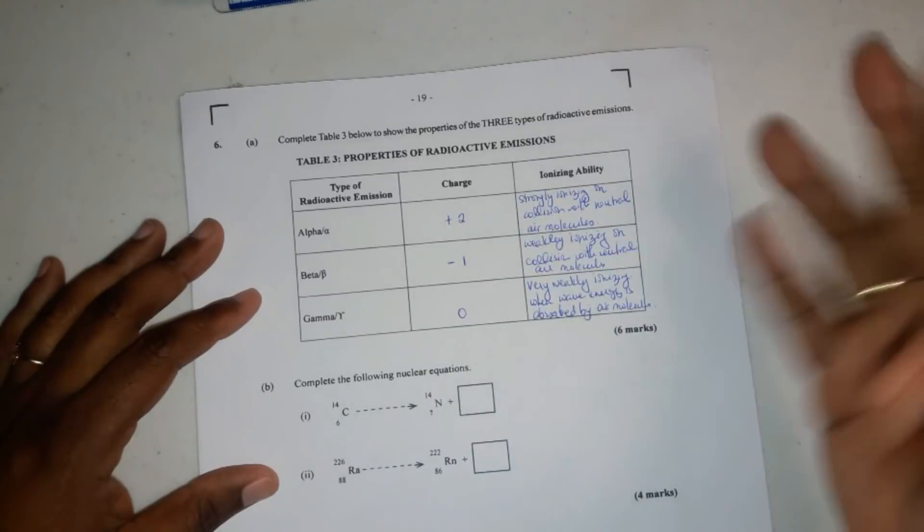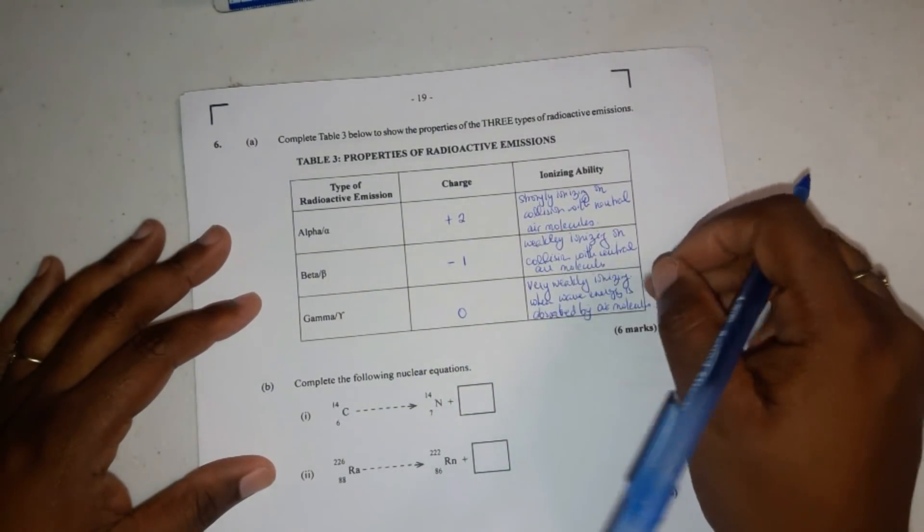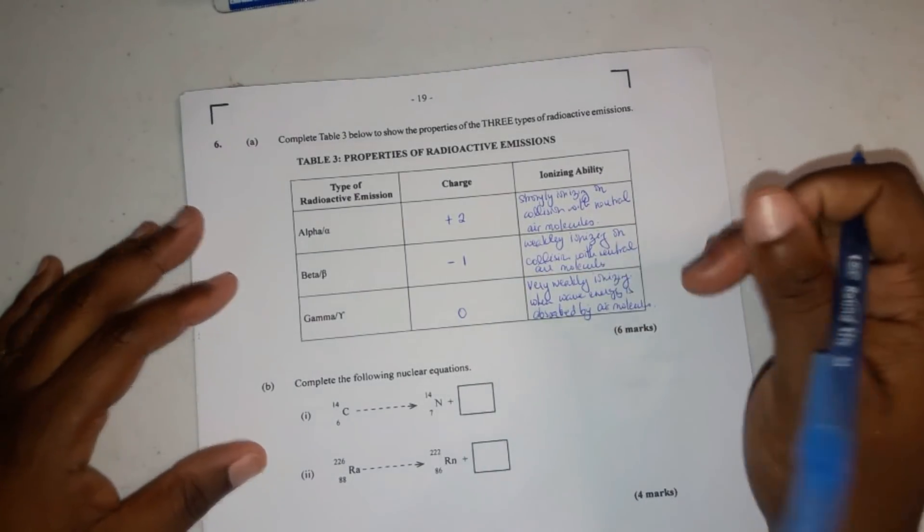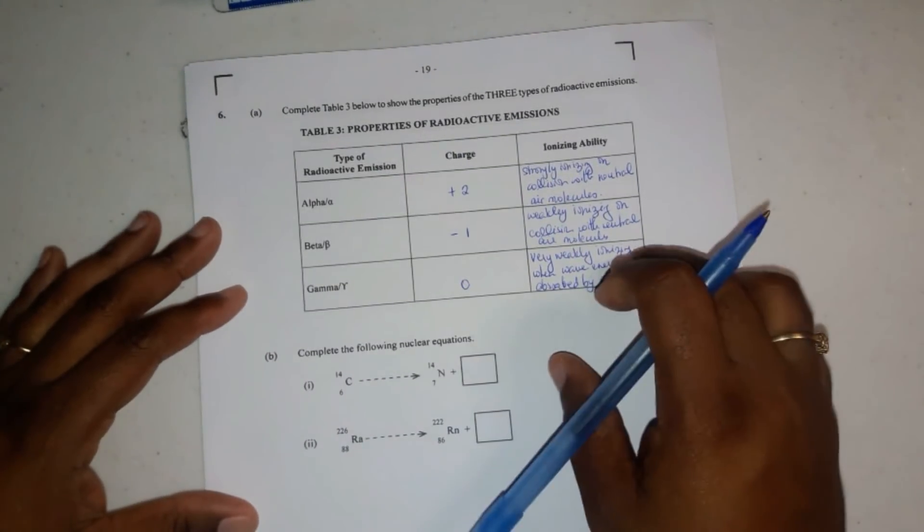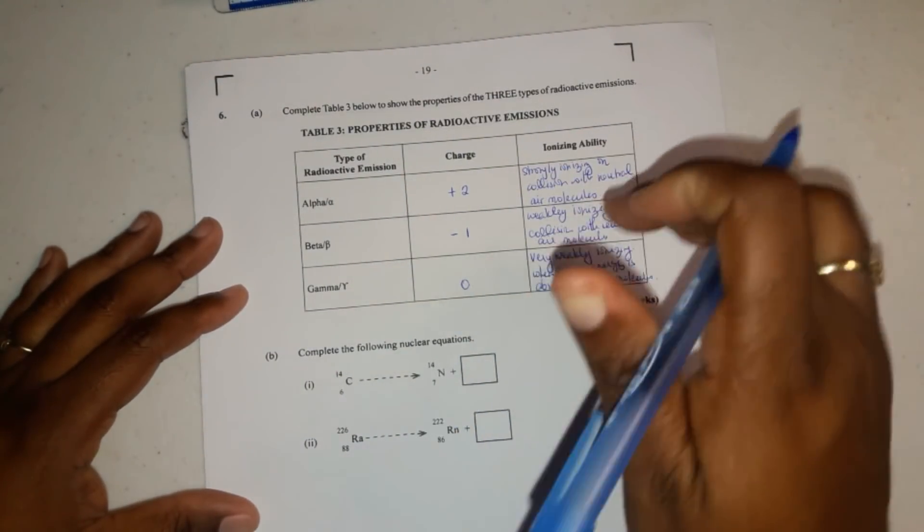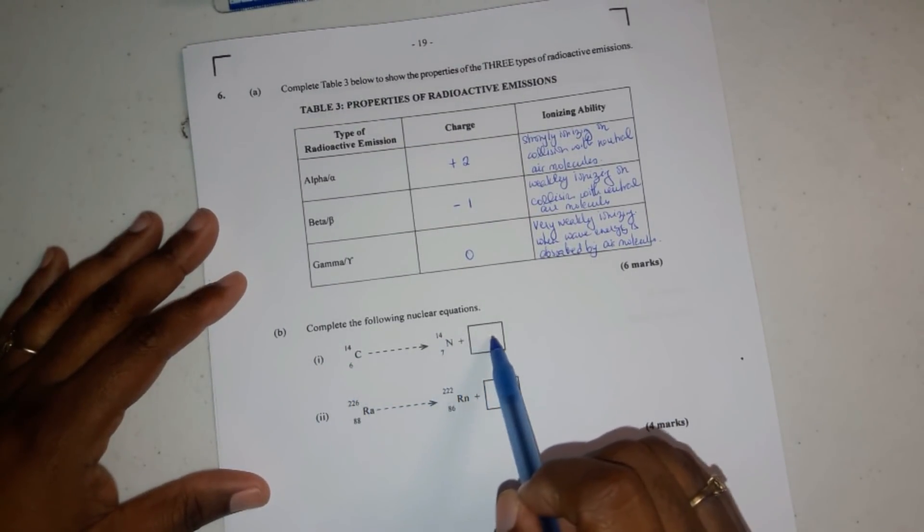So you should have something like this. So strongly ionizing, weakly ionizing, and very weakly ionizing with information given. Examples or information. We didn't need to put the information there. Just strongly, weakly, very weakly, right? Now it says here complete the following nuclear equations.